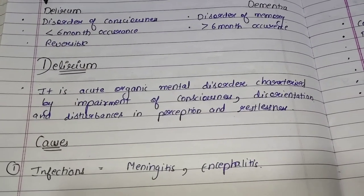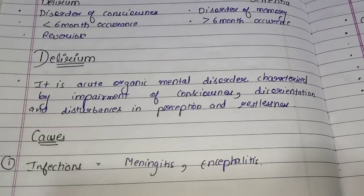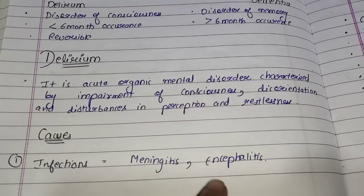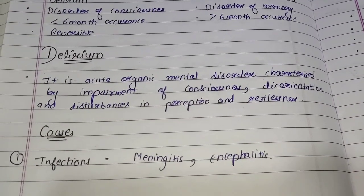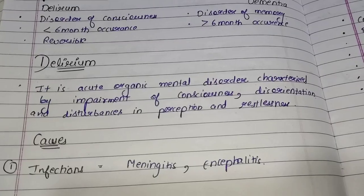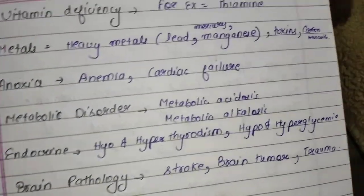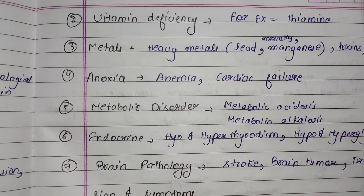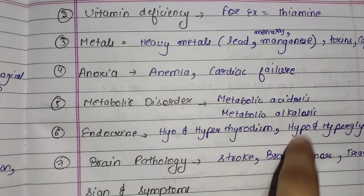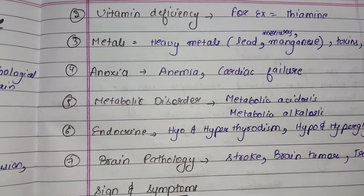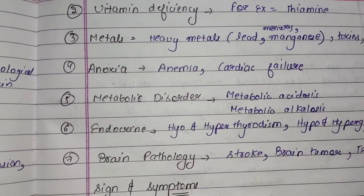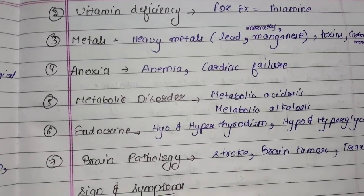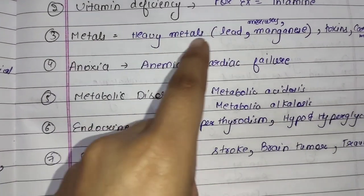Next we will study about the causes of delirium. The first cause is infections, such as meningitis. The second cause is vitamin deficiency, for example thiamine deficiency in the body.